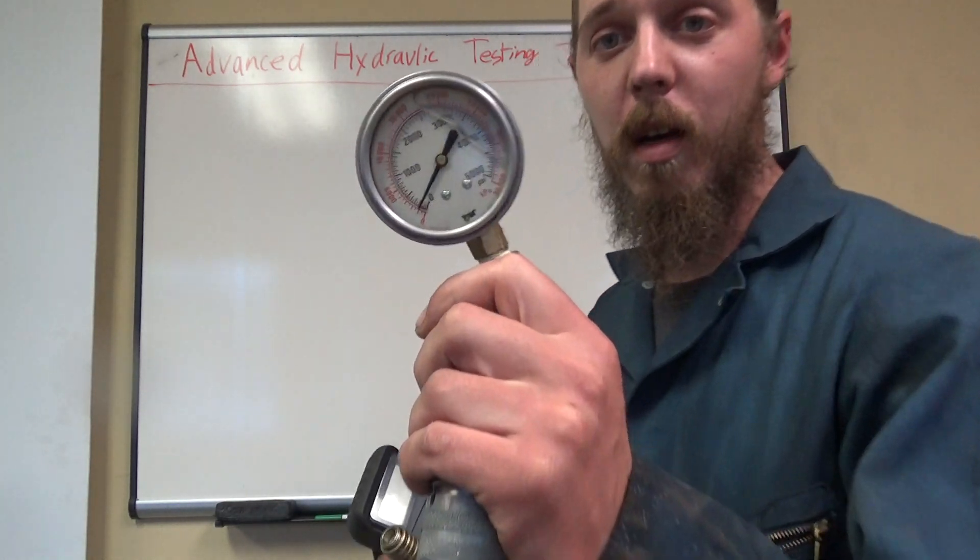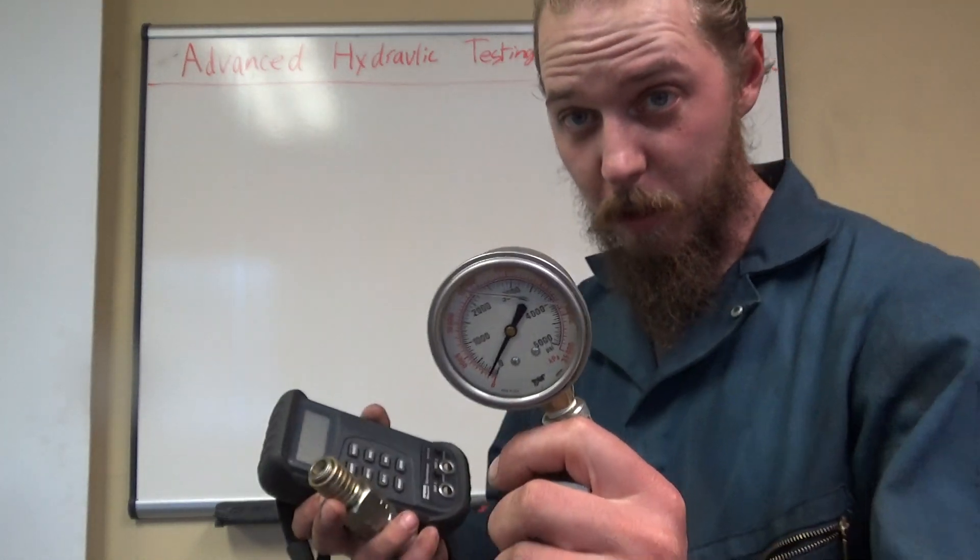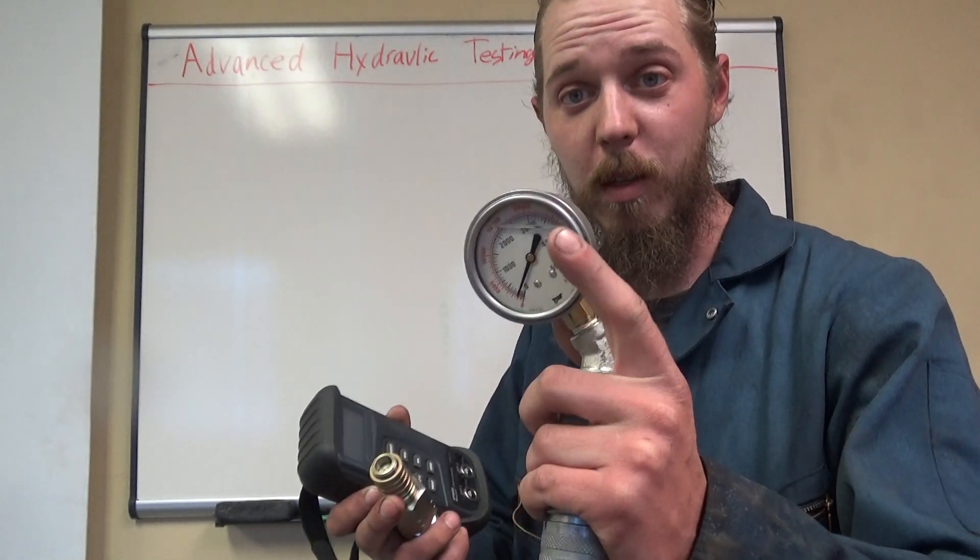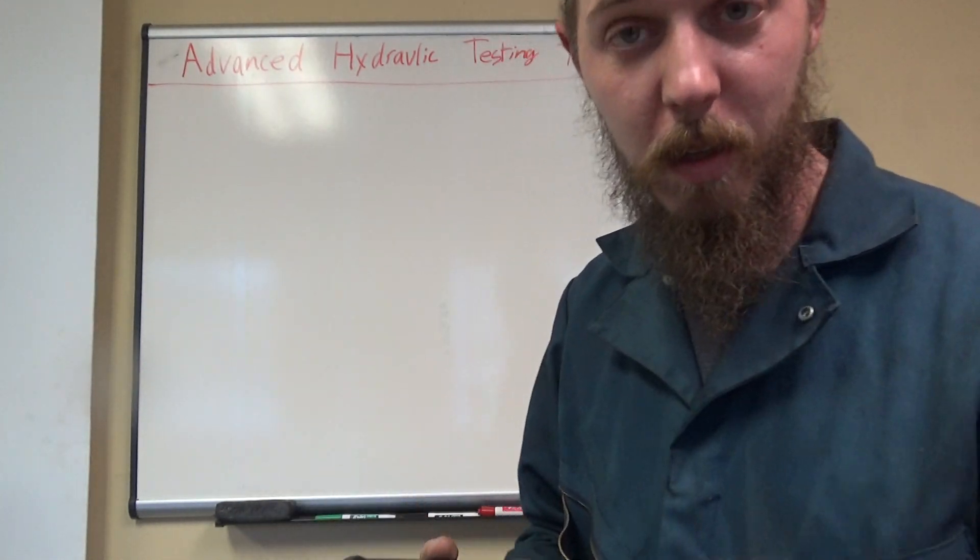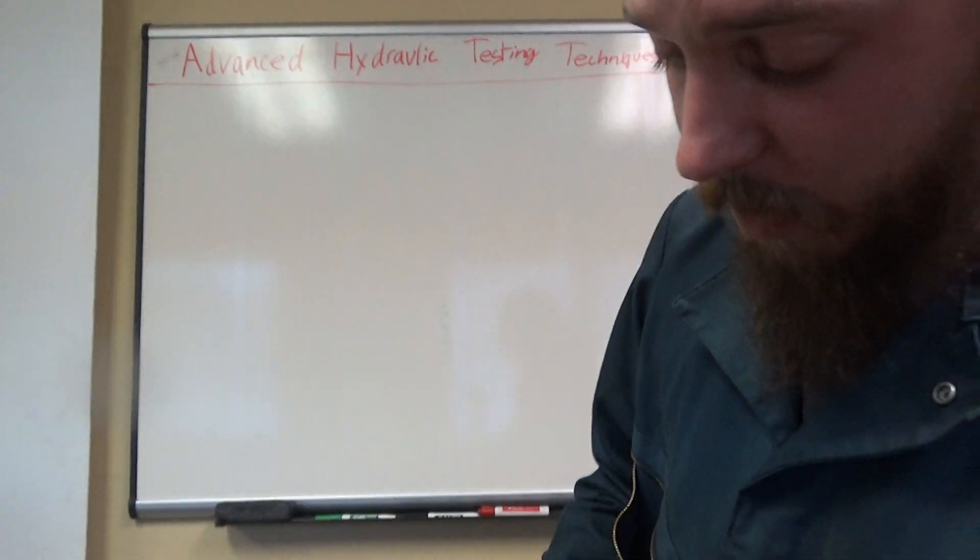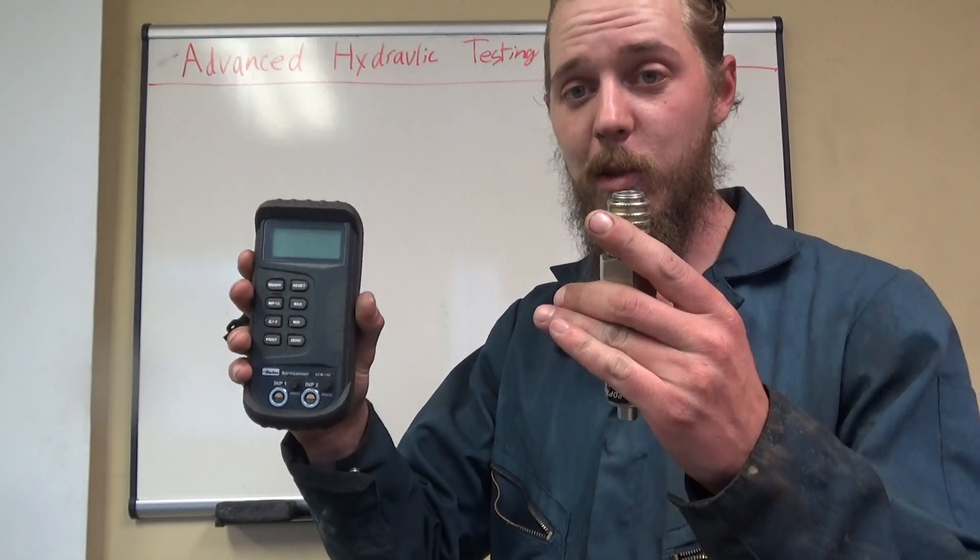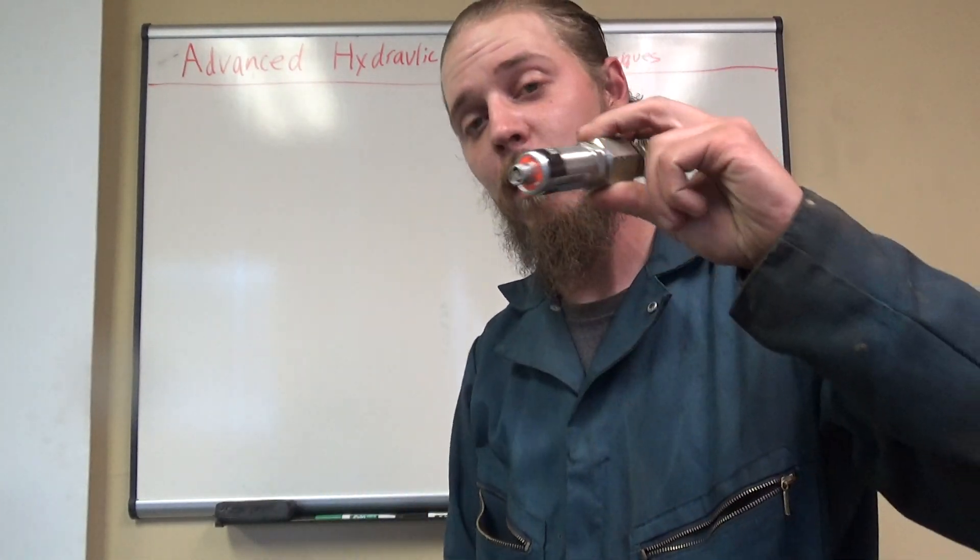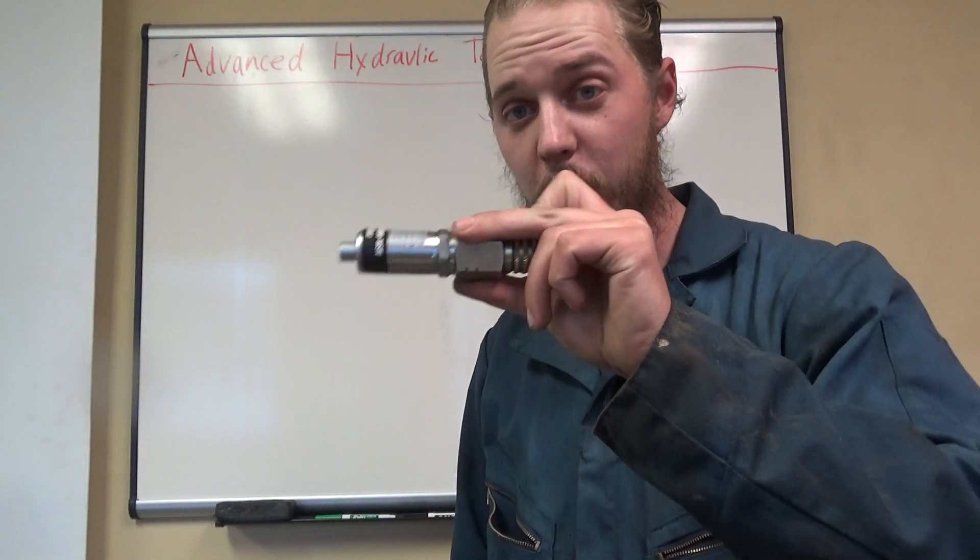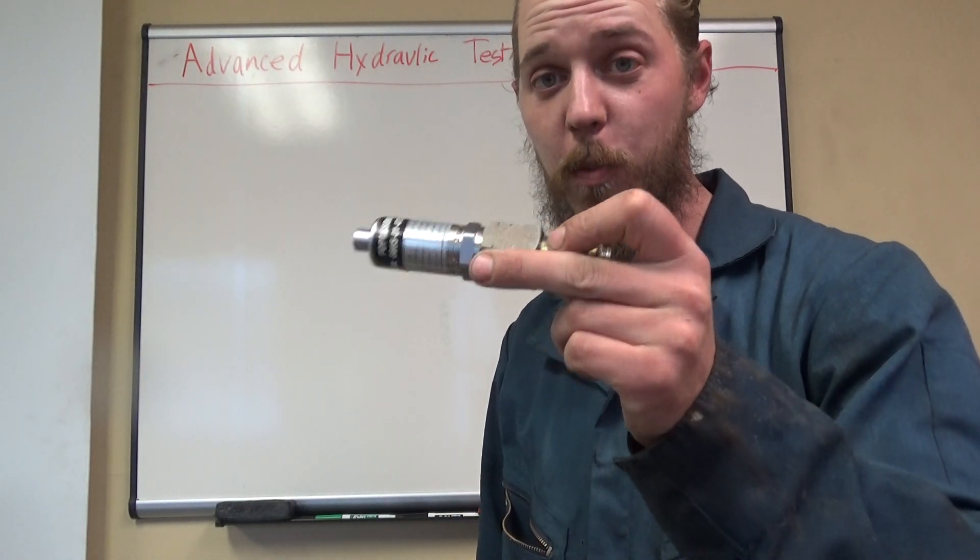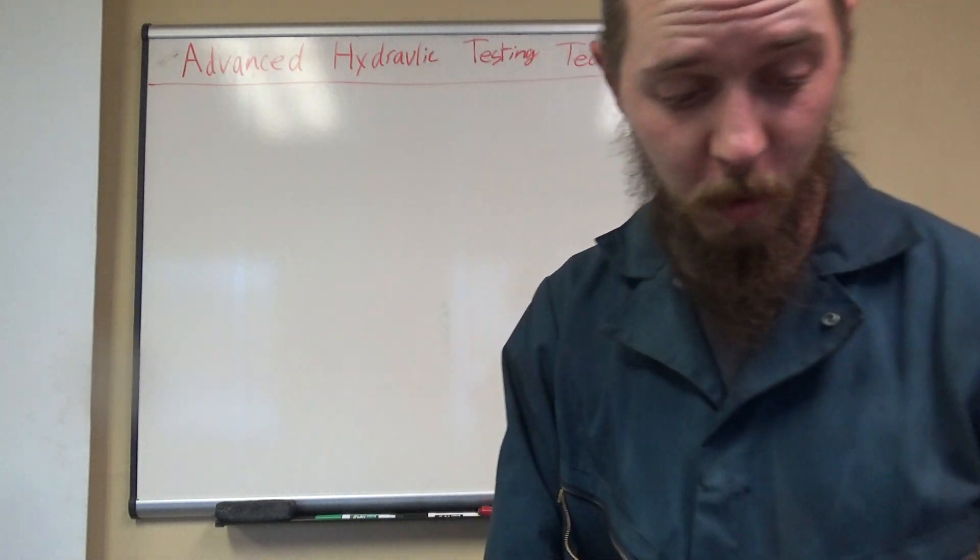What was nice about analog is you could see the fluctuations. If there was a valve bouncing, something like that, you could see it in the gauge vibration. Digital like this, all you see is a number reading. But we're all becoming increasingly familiar with these pressure transducers. And this is where I'd like to go.